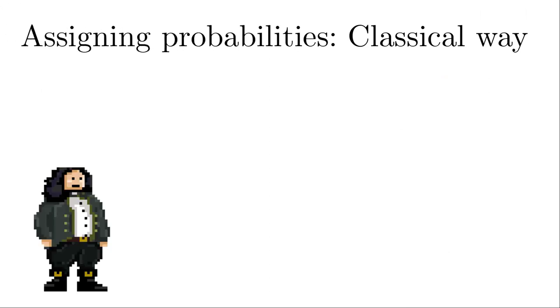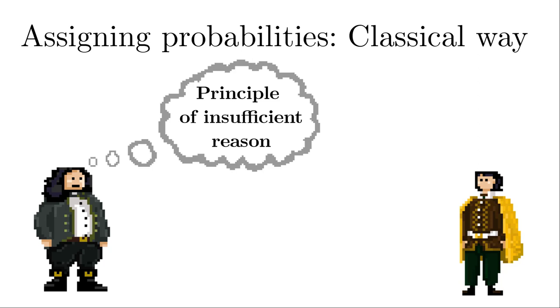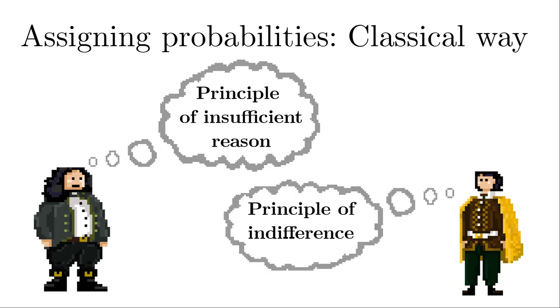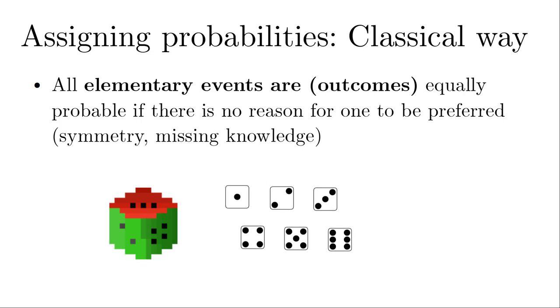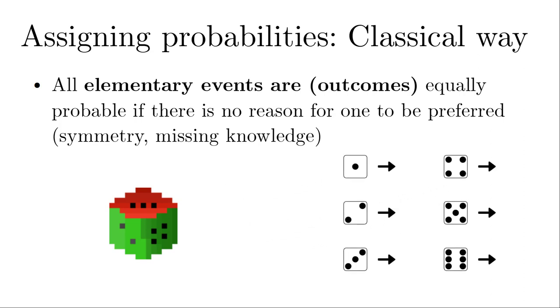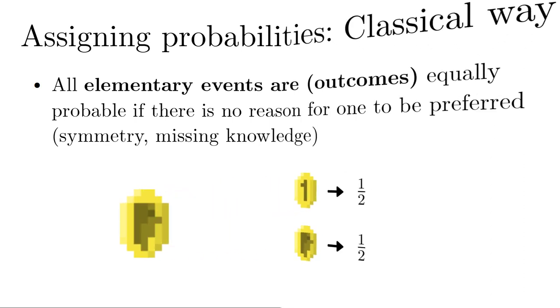Now let's see how our friends Bernoulli and Laplace solved probabilistic problems in the classical way. Well, they formulated the principle of insufficient reason, also known as the principle of indifference, which states the following. If the elementary events, the outcomes of an experiment, can be regarded as equal in the sense that none of them is preferred in any way, then we can assign the same probability to all of them. This is often true in the case of symmetric objects like a die or a disk as we have seen in the random compass. And it can also be due to missing information. For a perfectly symmetric die with six outcomes, this leads to an equal probability for each of the six outcomes of one-sixth, or which is approximately 17%. For the coin, the probability for each side is one-half.